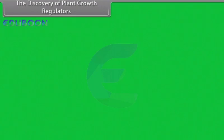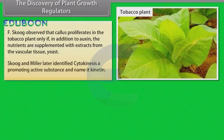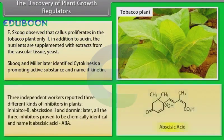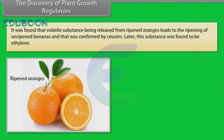F. Skoog observed that callus proliferates in the tobacco plant only if, in addition to auxin, the nutrients are supplemented with extracts from vascular tissue or yeast. Skoog and Miller later identified a cell-division-promoting active substance and named it kinetin. Three independent workers reported three different kinds of inhibitors in plants — inhibitor B, abscission-2 and dormin. Later, all three inhibitors proved to be chemically identical and were named abscisic acid (ABA). It was found that a volatile substance released from ripened oranges leads to the ripening of unripened bananas — confirmed by Cousins — and this substance was later found to be ethylene.